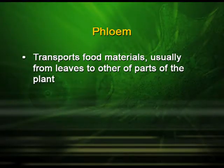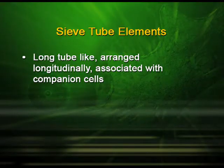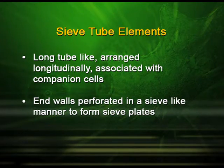Phloem is the food-conducting tissue. It transports food materials, usually from leaves to other parts of the plant. Its constituents are sieve tube elements, companion cells, phloem parenchyma, and phloem fiber. Sieve tube elements are long, tube-like cells arranged longitudinally and associated with companion cells. The end walls are perforated in a sieve-like manner to form sieve plates. Companion cells are parenchymatous cells closely attached to sieve tube elements by pit fields, and they maintain the pressure gradient in sieve tubes.